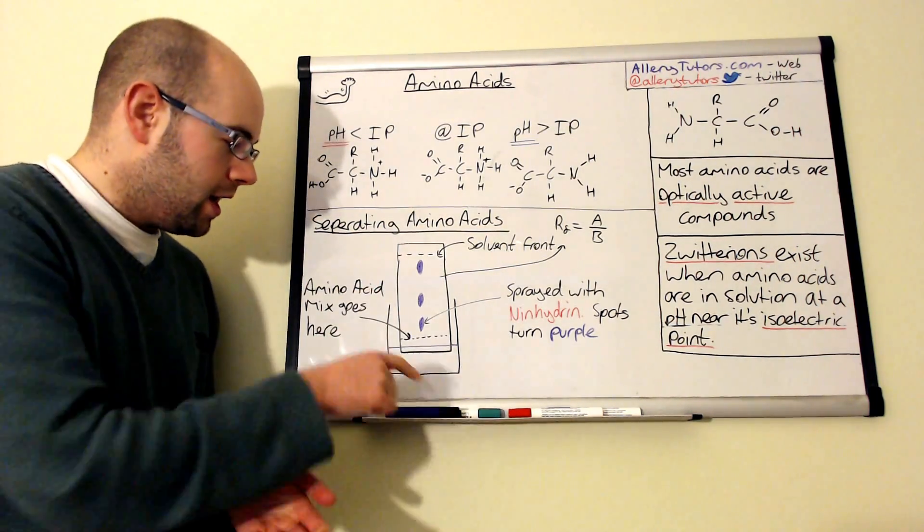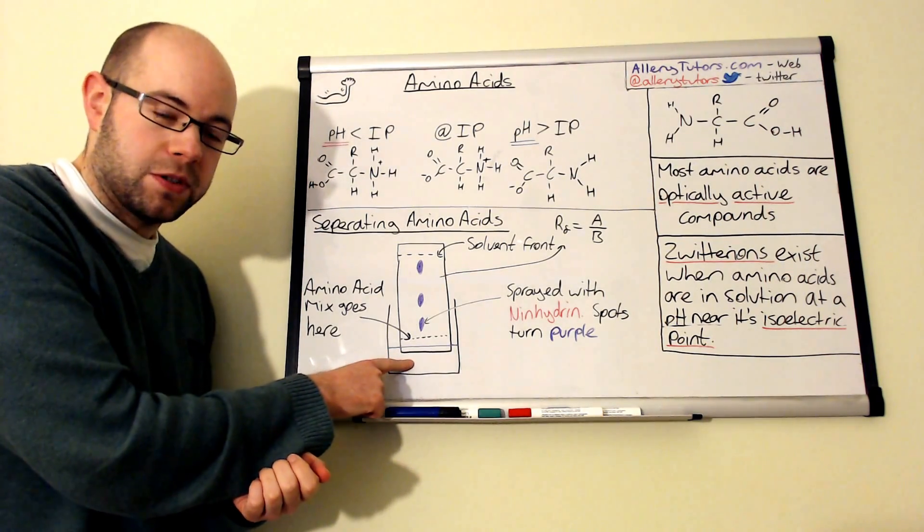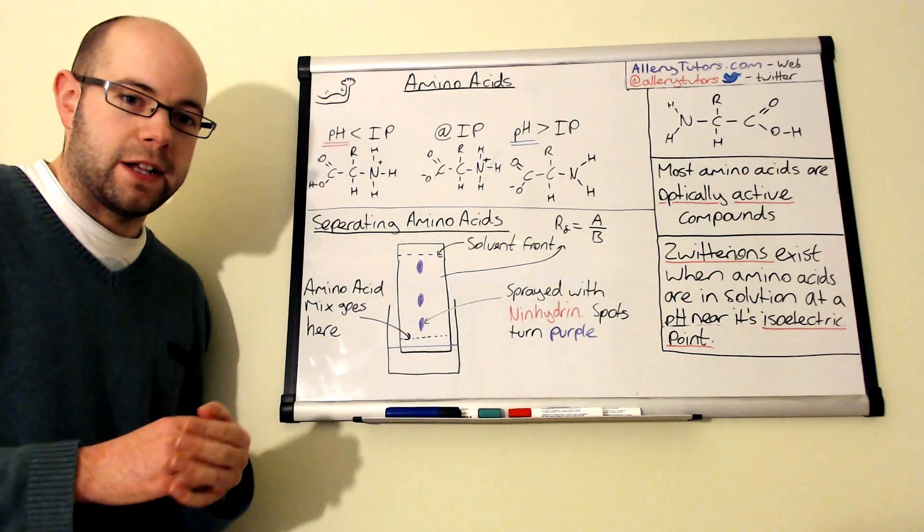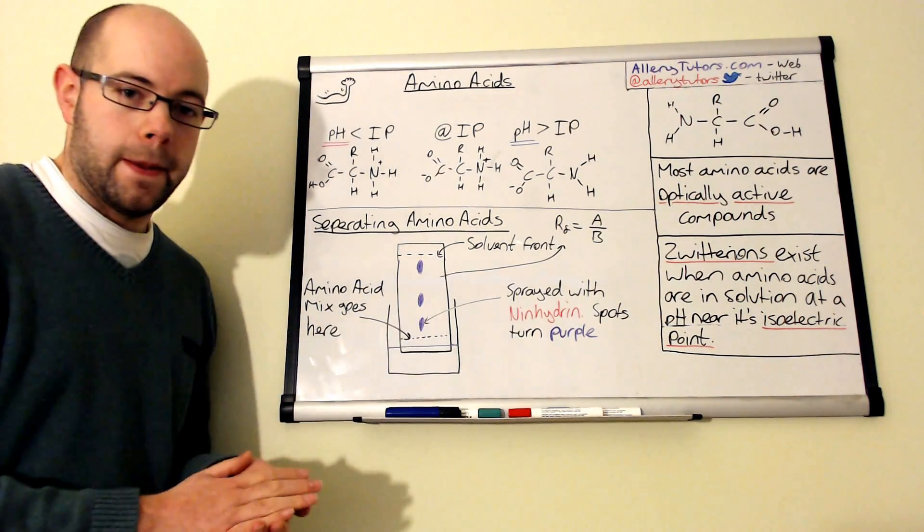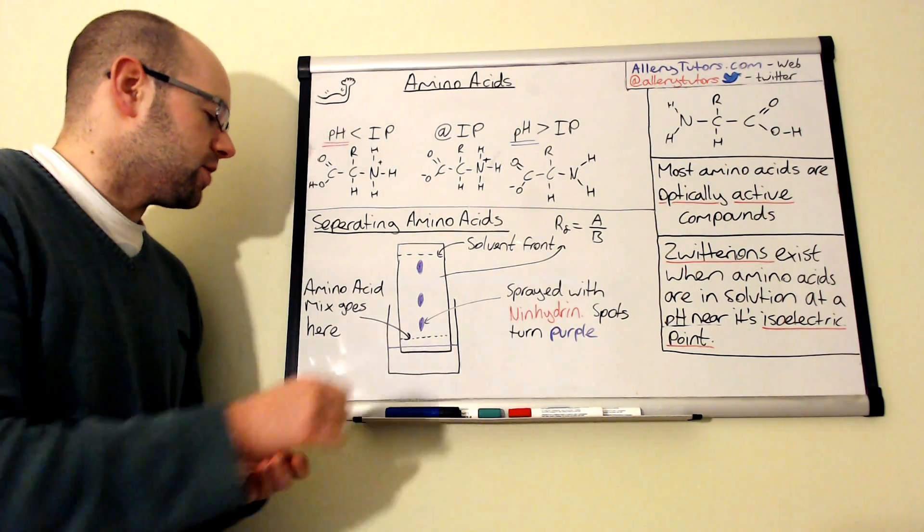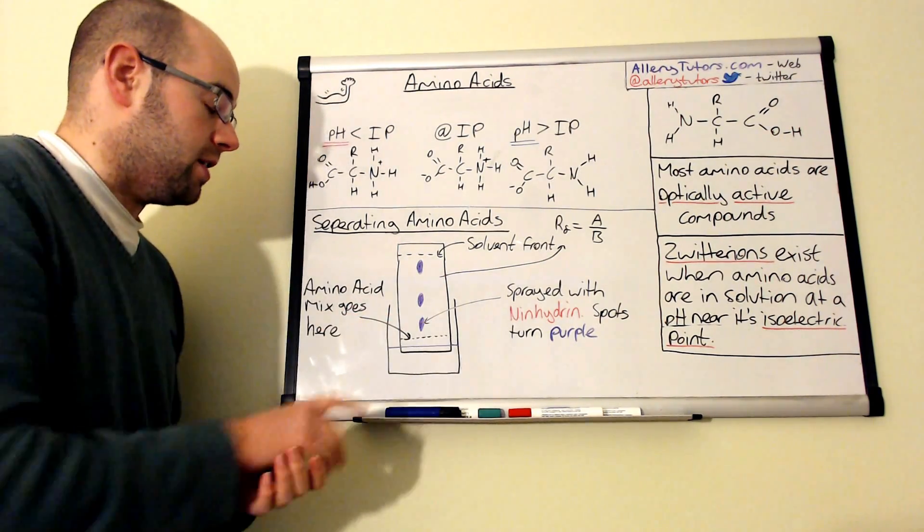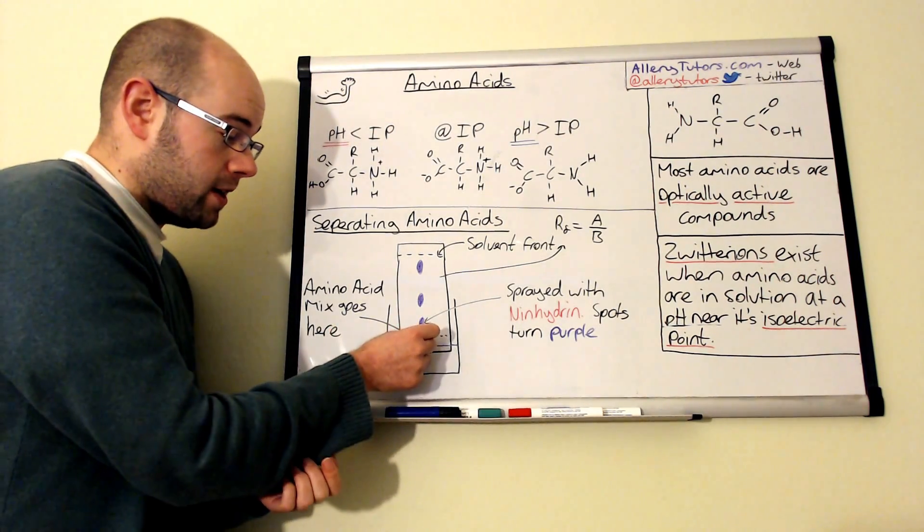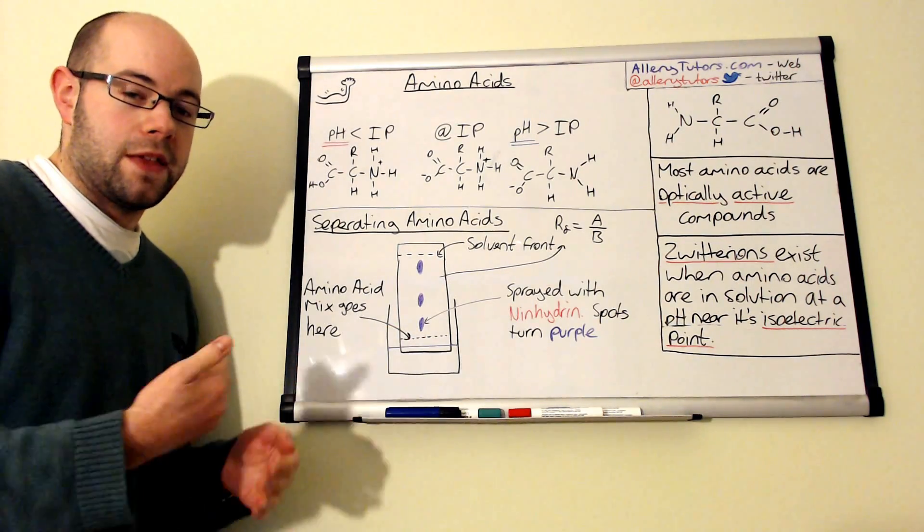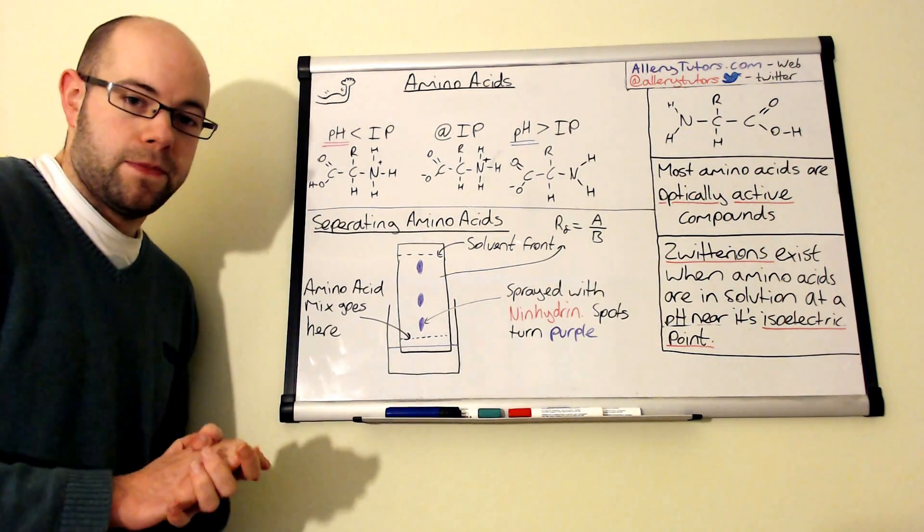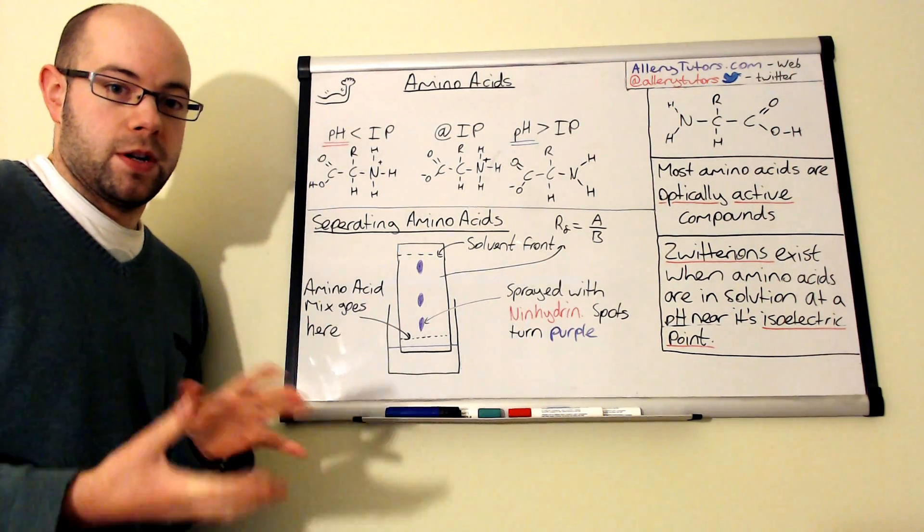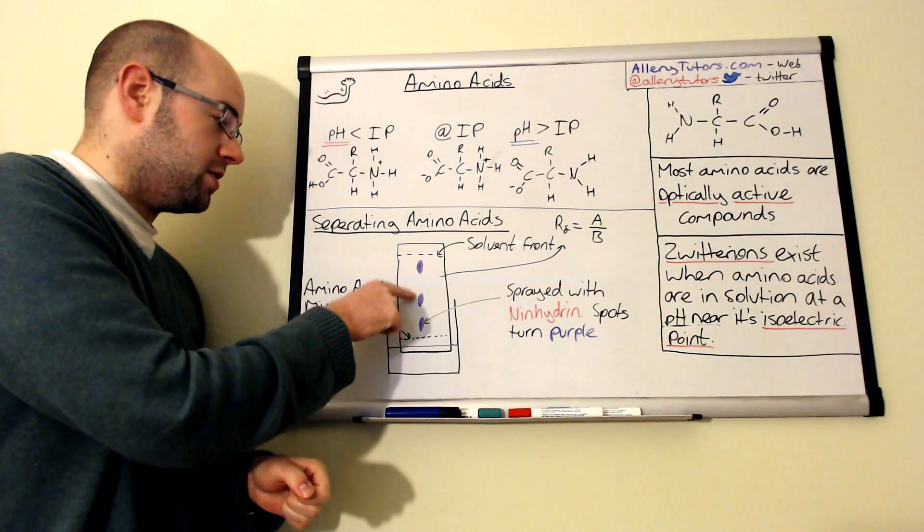So we've got an example here. Here's our beaker with a solvent in the bottom of it, as you can see there. And we have our pencil line, which is on the bottom. Again, you've got to use pencil. If you use a pen, then the ink can actually dissolve into the solvent and can rise up the paper as well. So we'll put our pencil line at the bottom. We put a concentrated mix of amino acids on that line there. And then we let the solvent rise up the chromatography paper. And what we get after a short while, we get our amino acids that start to separate.